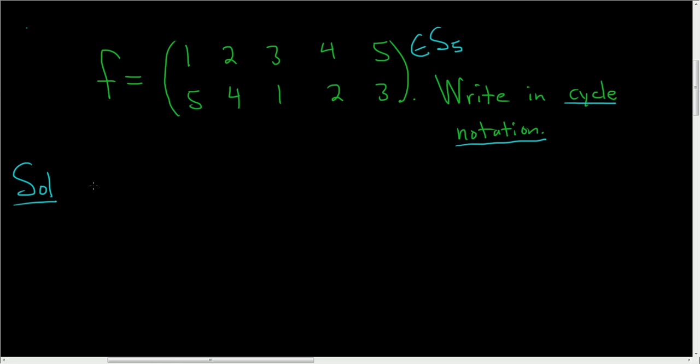In cycle notation we write a parentheses down and we can start with any number we like: 1, 2, 3, 4, or 5. Let's go ahead and start with the number 1, and if you look here this says that 1 goes to